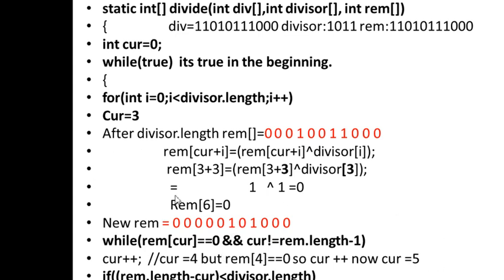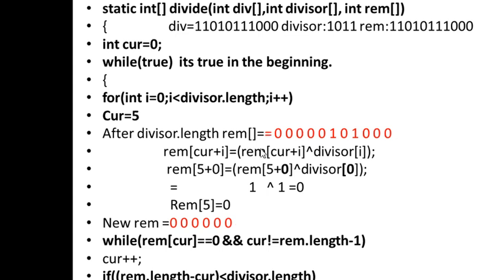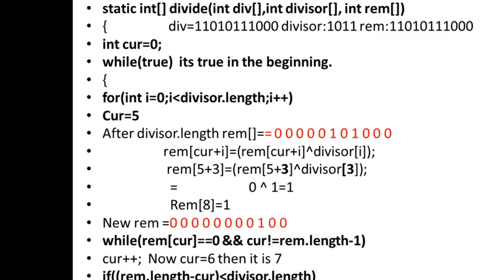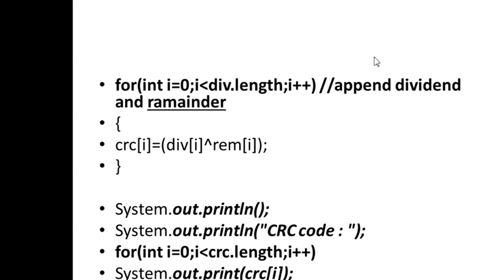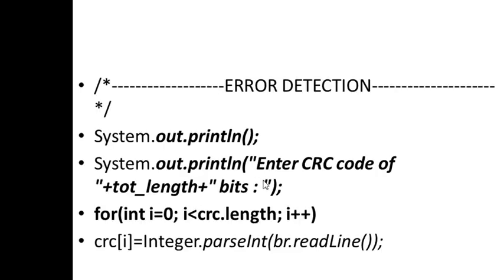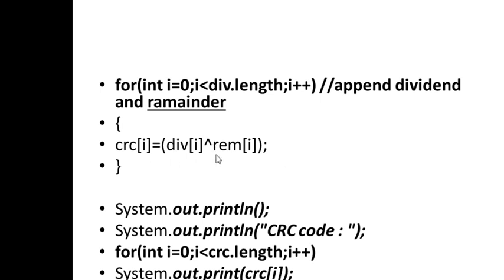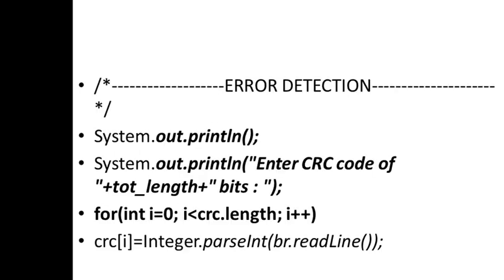The process continues placing current at the next non-zero position and performing XOR with the divisor. After all iterations, the final remainder value is 1 0 0. This 3-bit remainder is the CRC code. The CRC code is then appended to the original message. At the receiver end, the received message is again divided by the same polynomial for error detection.